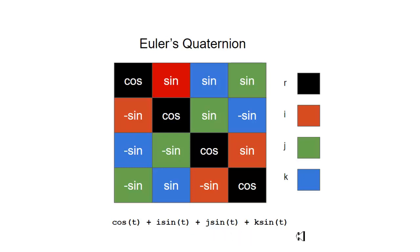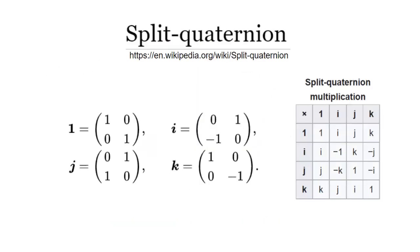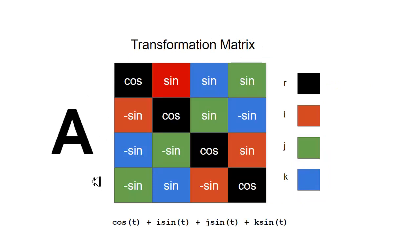This is Euler's quaternion formula in 4x4 matrix format: algebraically cos theta, I sine theta, J sine theta, K sine theta. The cosine goes on the forward diagonal, then I, J (green), and K (blue) fill the rest. Multiplied by a scalar, this 4x4 matrix becomes a transformation matrix that allows you to transform points from one coordinate system to another, or from one place in 3D space to another.